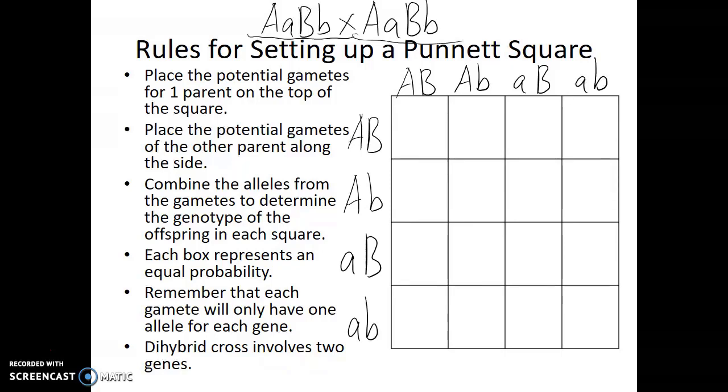Now it's time to start determining what potential offspring would result from the combination of these gametes. To do that, we list both A alleles first and both B alleles second. We need to look at what alleles are provided by the gametes on top of each column, and also look at what alleles are provided by the gametes in front of each row. So this first square is going to be capital A, capital A, capital B, capital B.